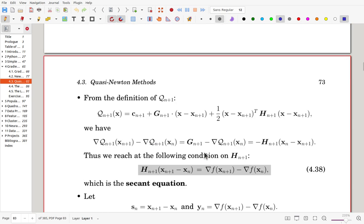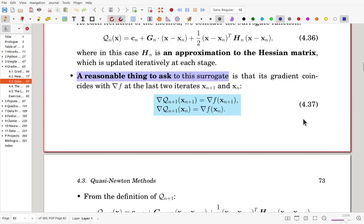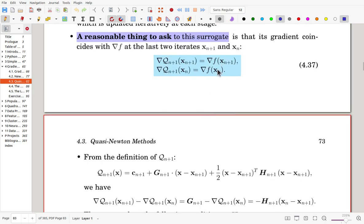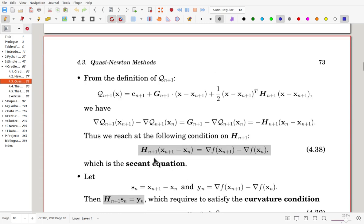From the formula here, Qn+1 can be written in this form. That is the rewriting of that surrogate function with n replaced by n+1. Now the gradient of Qn+1 at xn+1 minus gradient of Qn+1 at xn. If you do algebraic computation, then you can reach that one. Now this difference must be same as the difference here. So we can get that equation.